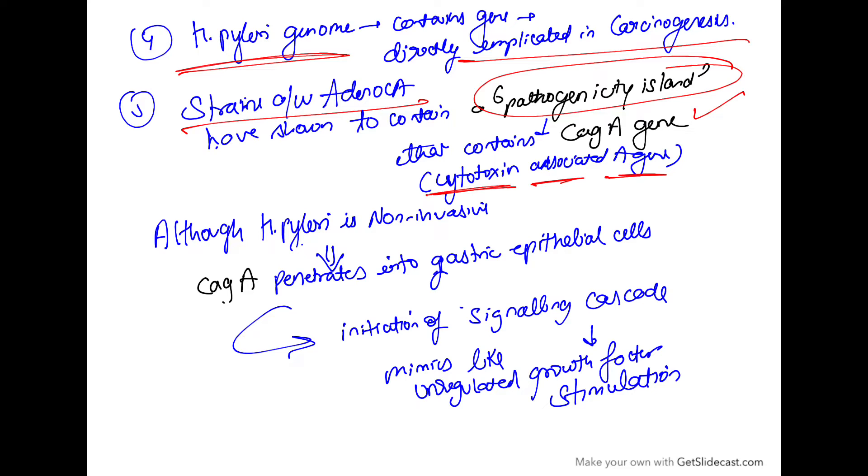CAG-A gene stands for cytotoxin associated A gene. Although, how it works? We know that H. pylori is non-invasive but CAG-A gene, it penetrates into the gastric epithelial cells and this CAG-A gene,